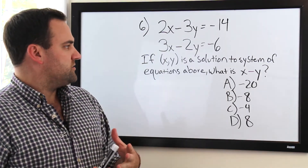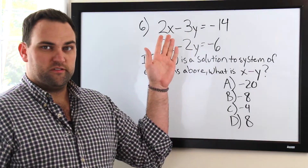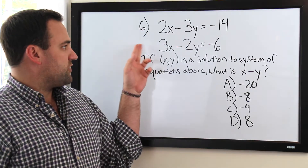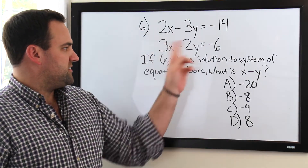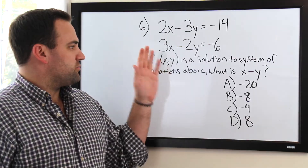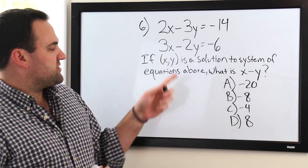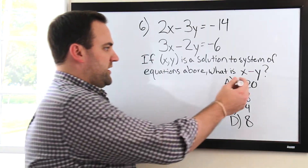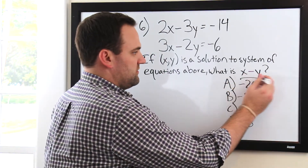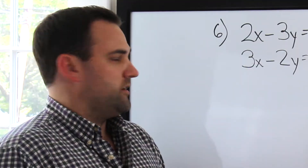A lot of students will either start by trying to solve for one of the variables and plug it into the other equation, or they might try to subtract this equation from the top equation — but they'll run into some problems with the signs. Remember, we're not just looking for x or y. We want x minus y, so we really want to get that by itself.